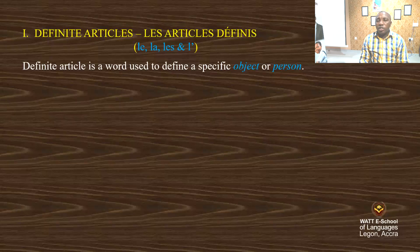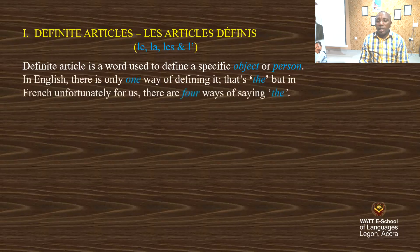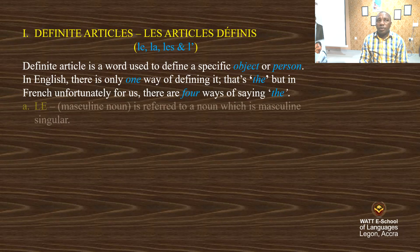In English, there is only one way of defining it — that's 'the.' But in French, unfortunately for us, there are four ways of saying 'the.' Let's have a look. Le is used for a masculine noun.